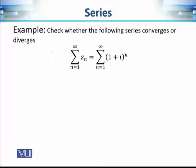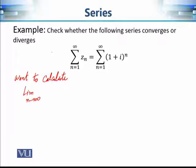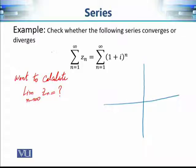Now let's apply this necessary condition to check the convergence of the complex series whose terms are defined as (1 + i)ⁿ. In other words, as we increase n, we are taking powers of this complex number. To apply this criterion, we want to calculate the limit as n approaches infinity of zₙ. If the sequence converges to the origin, then the moduli of these complex numbers also converge to 0.